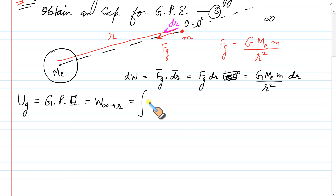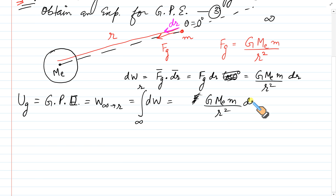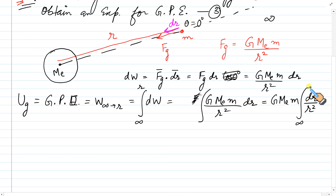یہ ہم integral کر دیتے ہیں dW کا، infinity سے point r تک۔ Ug = ∫ F dr = ∫ G·Me·m / r² dr, infinity سے r تک۔ G·Me·m constant ہے، integral کے باہر آ جاتا ہے۔